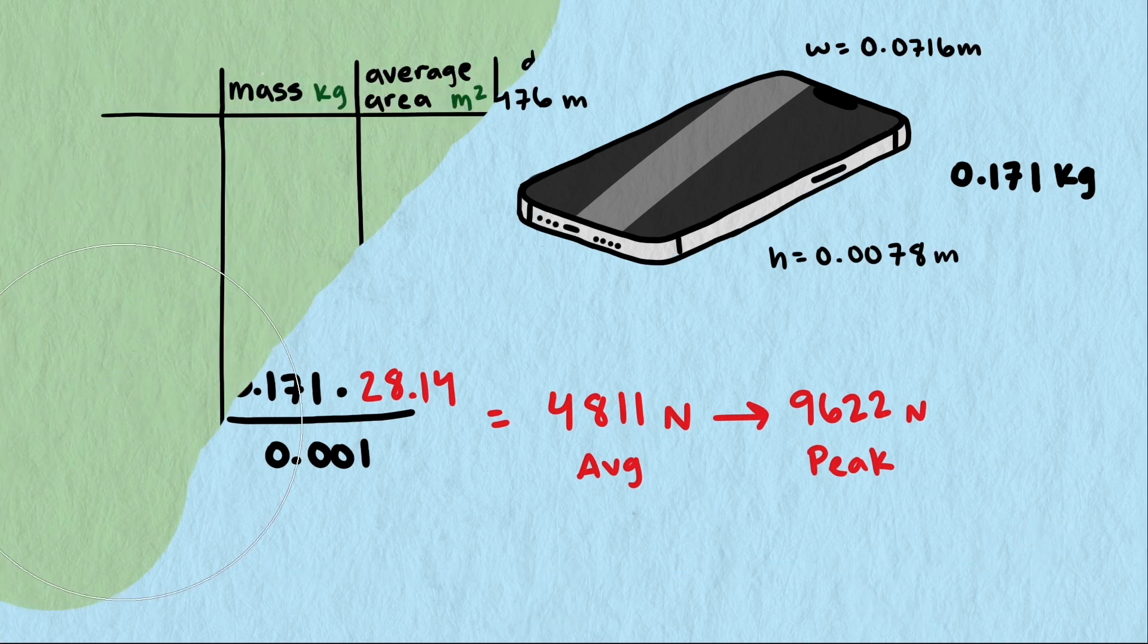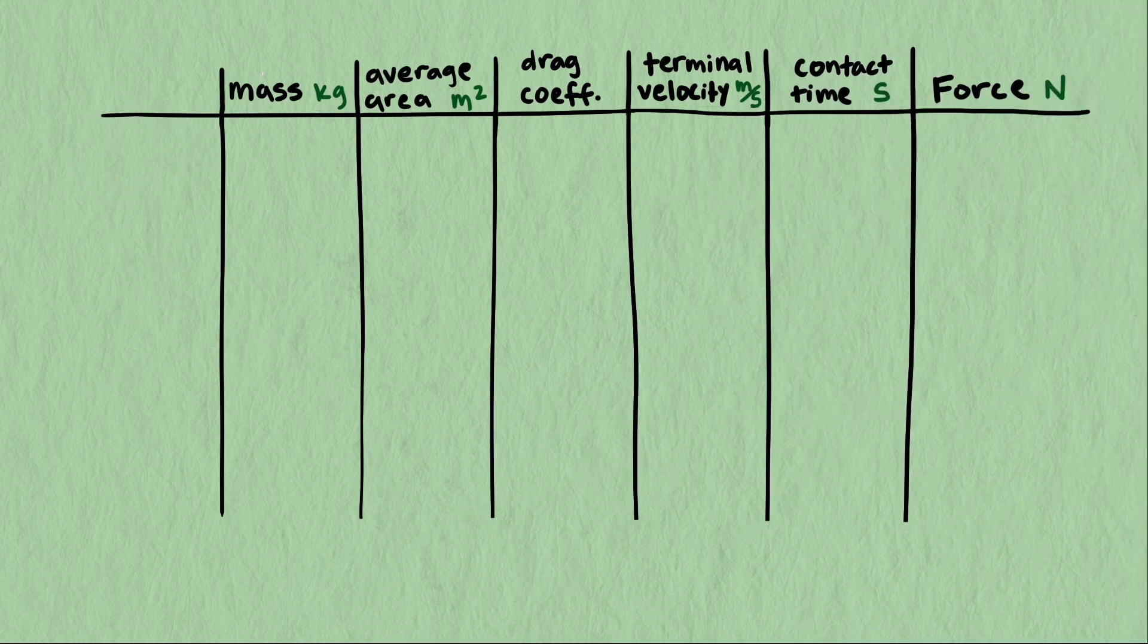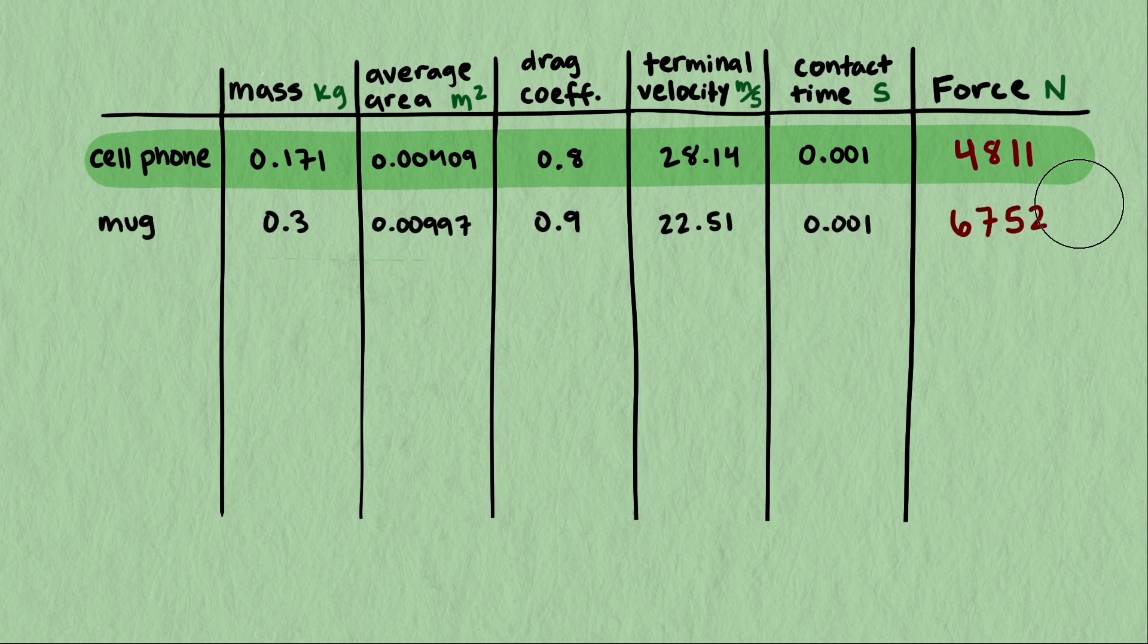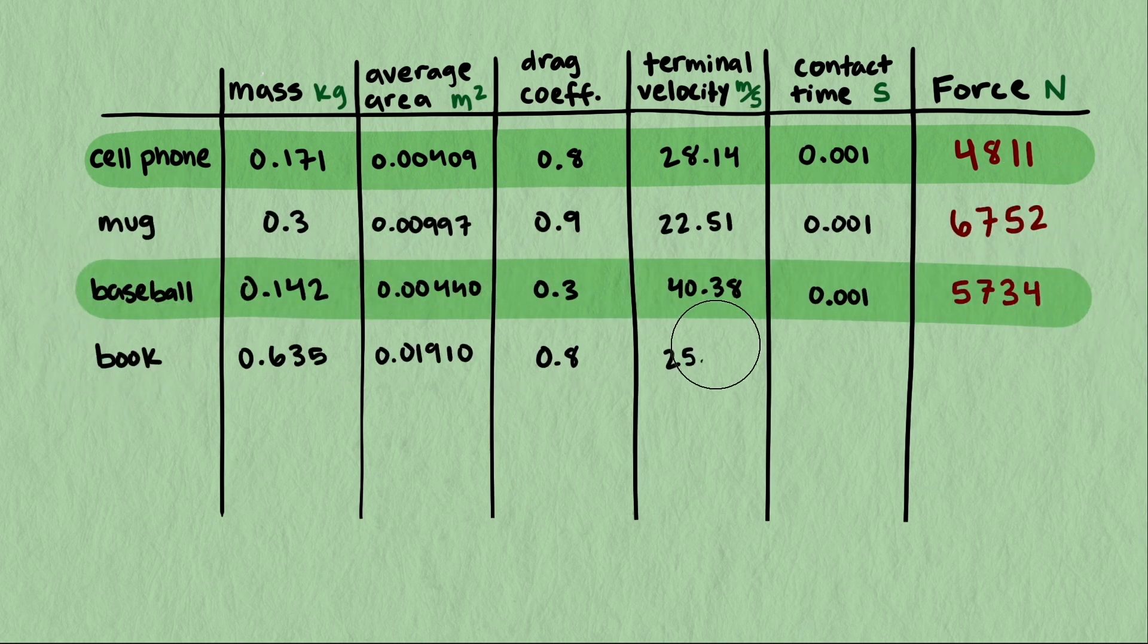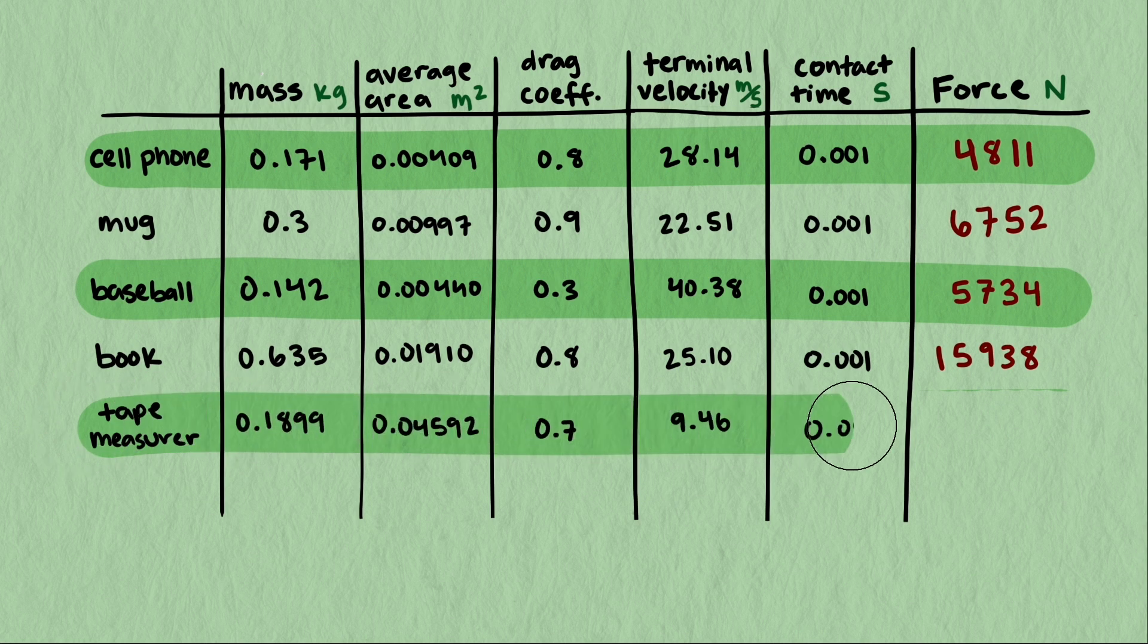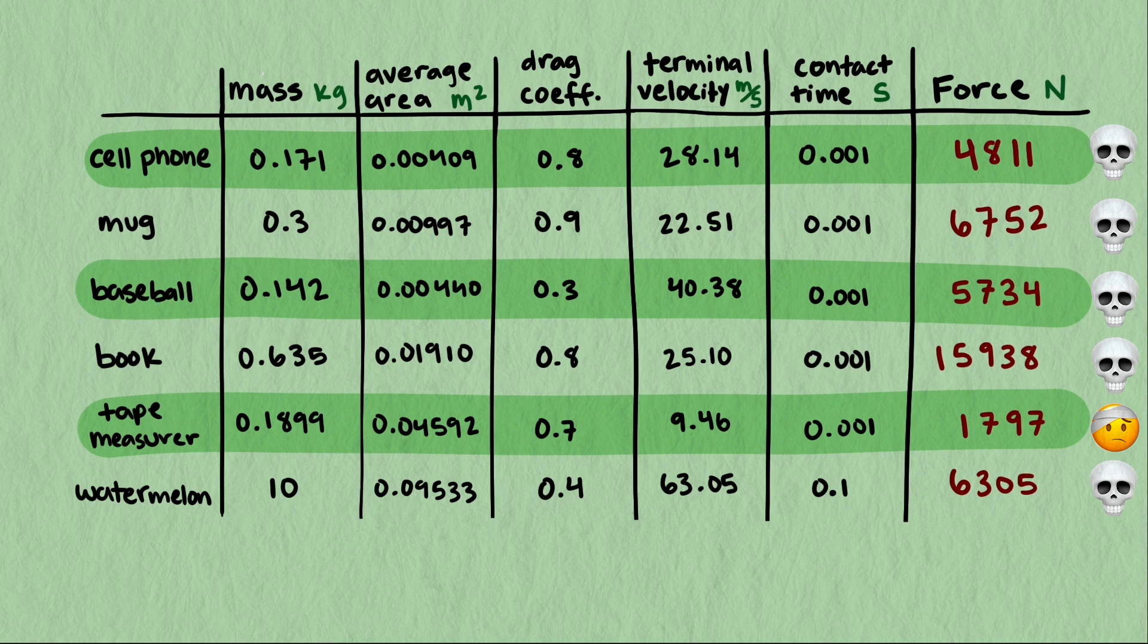For our other objects, we won't go into detail for all of the assumptions, but here are the values we estimated and our final calculations. For each of them, we used a similar process to the phone. We assumed the objects were tumbling and averaged cross-sectional areas of the objects, as well as averaging drag coefficients. As you can see, most of these are quite lethal, all except the tape measure, though that still would not be fun to get hit in the head with. This is why hard helmets are so important at construction sites.